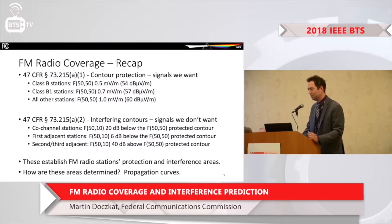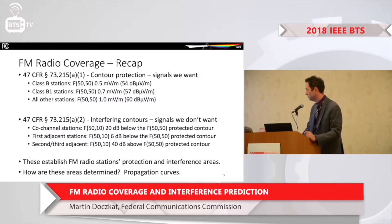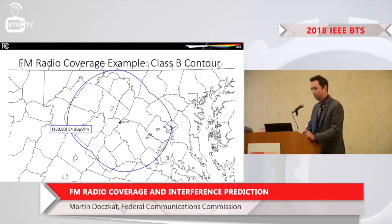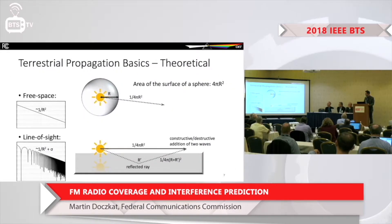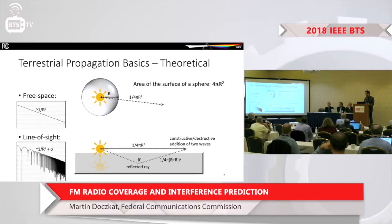The first step is establishing these numbers and limits. The geographic component — where are those signals supposed to be received — moves us into propagation curves and how signals are predicted. Here's an example of a contour: it looks like a circle extending different distances from the transmitter in different directions. For the theoretical basics, free space propagation follows an inverse square law — proportional to one over r-squared, because the surface of a sphere is 4πr². In line-of-sight propagation, you get constructive and destructive addition of signals.